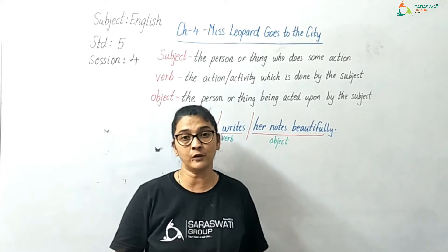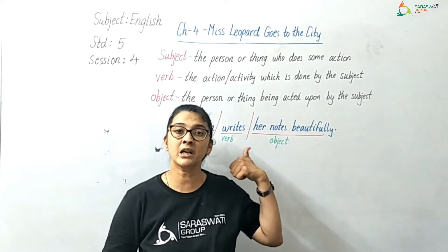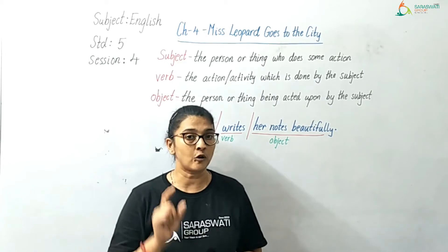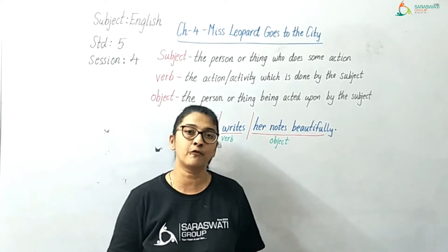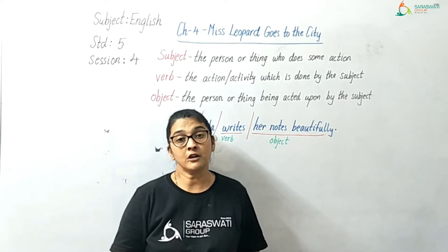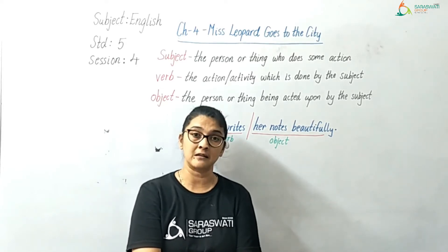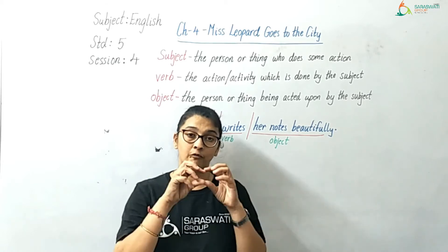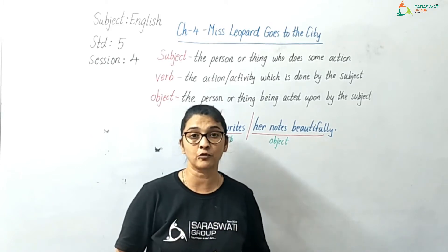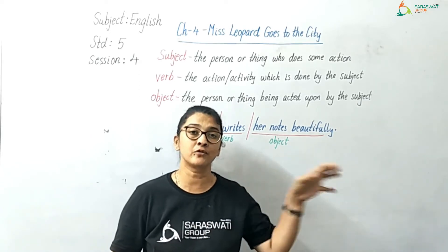The first grammar point which we are going to learn in this session is subject, verb, object. A very simple thing — please concentrate and it will be very easy for you. Now we are talking about the structure of the sentence. There are different points through which the sentence is made up of — that is subject, predicate, and object. These are the parts of the sentence.